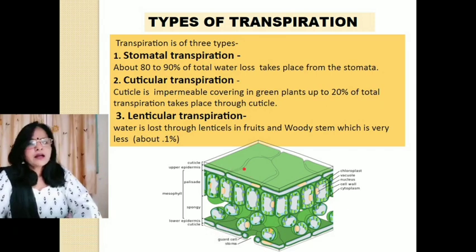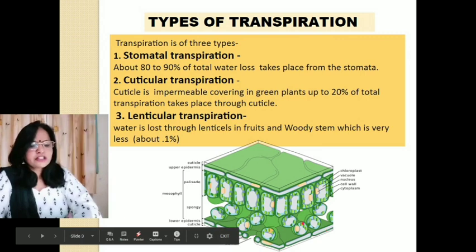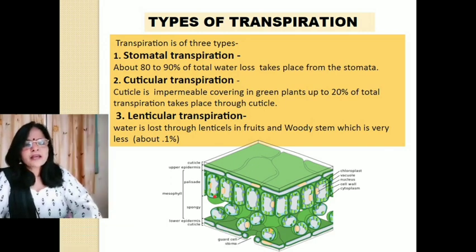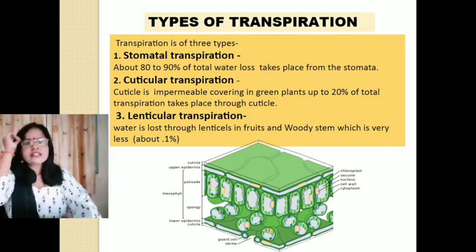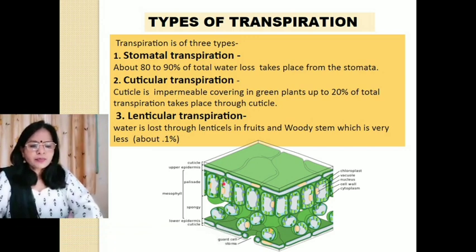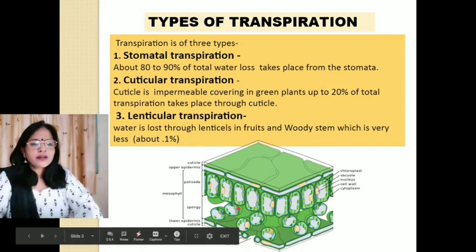Looking at the leaf structure: the outer layer is the upper epidermis, covered by the cuticle. The lower epidermis contains very small pores called stomata. The portion found between the upper epidermis and lower epidermis is called mesophyll, which is divided into two types of cells: palisade cells, which are compactly arranged just below the upper epidermis, and spongy parenchyma cells found just above the lower epidermis. Both are chlorenchyma cells.